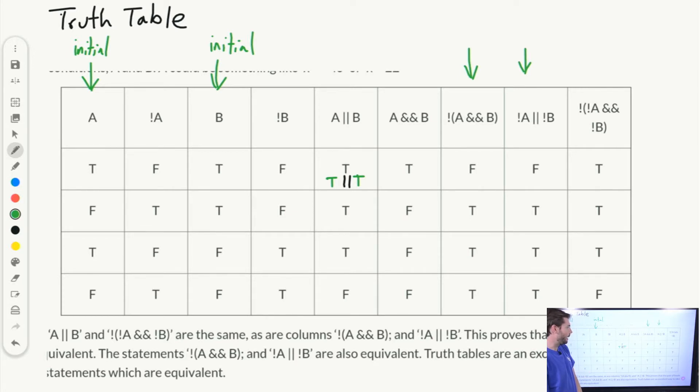And another really interesting relationship is actually this relationship here, where we have A OR B is the same as NOT, NOT A and NOT B. Really interesting relationship there where flipping the NOTs and the ANDs give us different results.